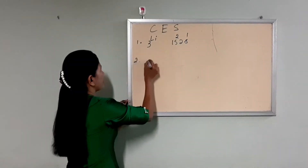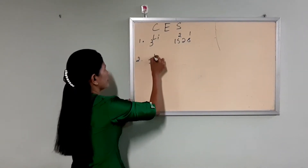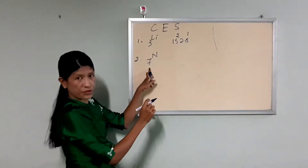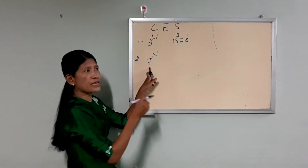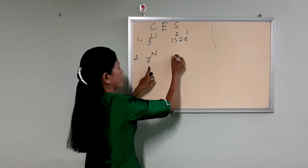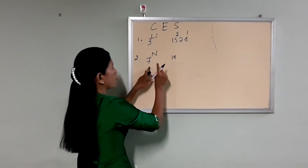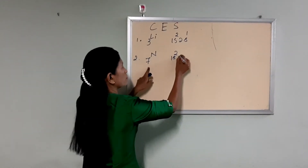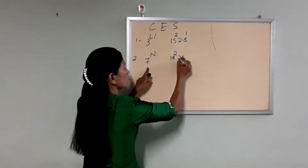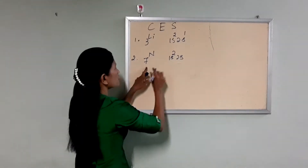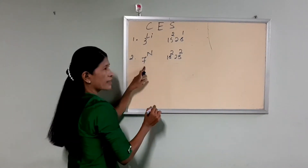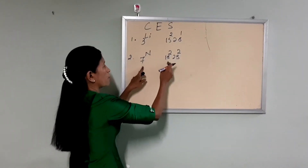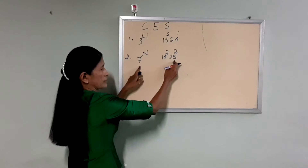Now we're going to use nitrogen, N. We're going to use 1s, then 1s, then 2s.